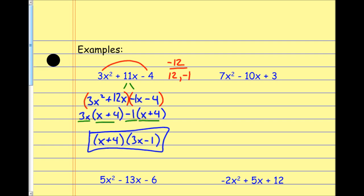Looking at the next one, I build a bridge: 7 times 3 is positive 21. I need two numbers that multiply to positive 21 but add to negative 10. You might not come up with these as quickly at first, but with more practice you get better. Those numbers are negative 7 and negative 3 — negative 7 times negative 3 is positive 21, and negative 7 plus negative 3 is negative 10.